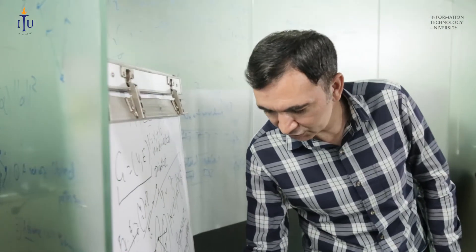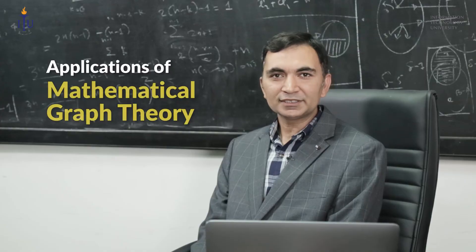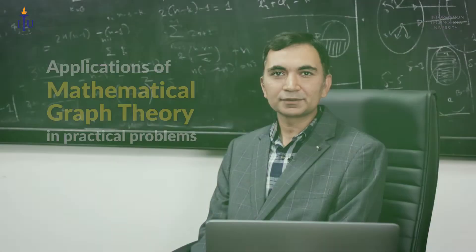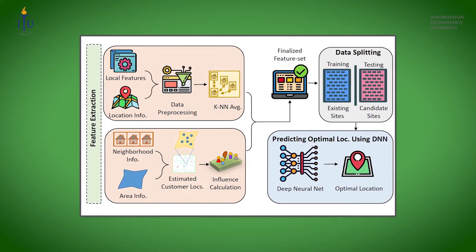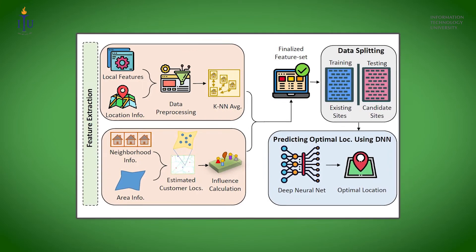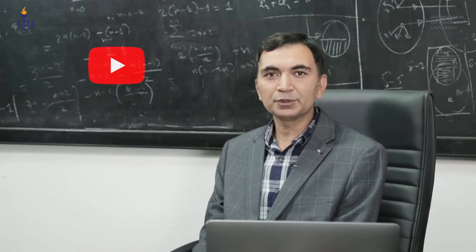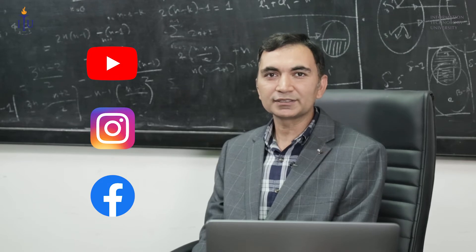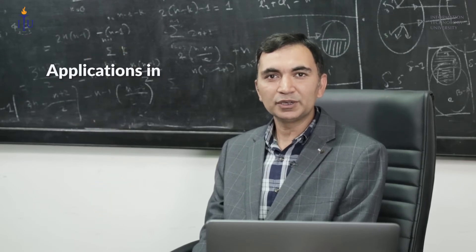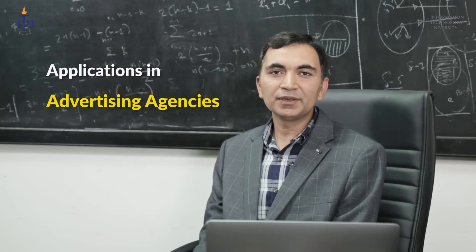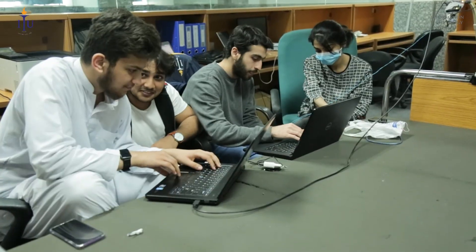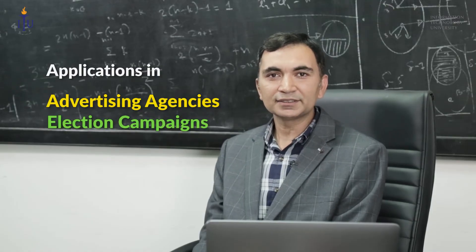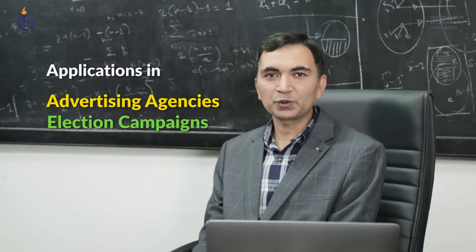My main area of research is to find applications of mathematical graph theory in practical problems. In the past, we have used mathematical modeling to find influential users on social networks like YouTube, Instagram, or Facebook. This type of work is extremely valuable to advertising agencies who might be interested in viral dissemination of certain content. Election campaigns are an excellent example of applications of this type of work.